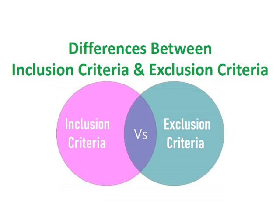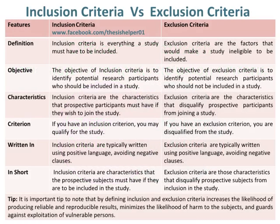Inclusion criteria is everything a study must have to be included, whereas exclusion criteria are the factors that would make a study ineligible to be included. The objective of inclusion criteria is to identify potential research participants who should be included in a study, whereas the objective of exclusion criteria is to identify potential research participants who should not be included in a study.